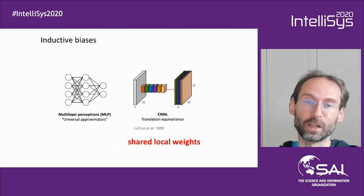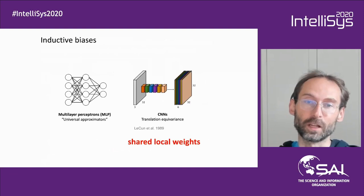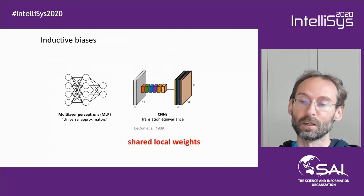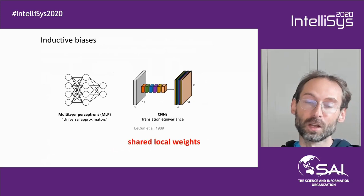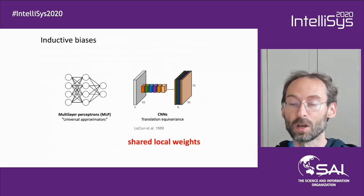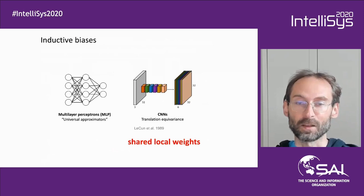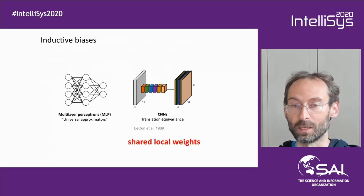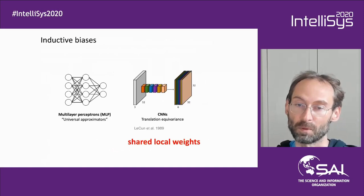The right inductive bias was really the crucial thing that made deep learning work, in particular in computer vision problems where it provided stellar performance. These are the classical convolutional neural networks where the inductive bias came in the form of what is called translation equivariance, or shared local weights — the idea that you can recycle the same weights and apply them at different positions in the image.